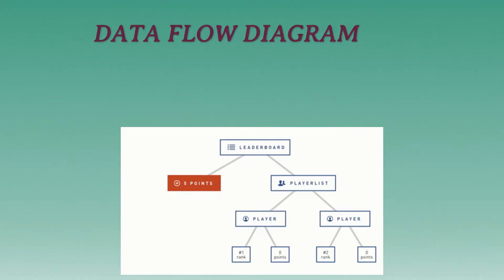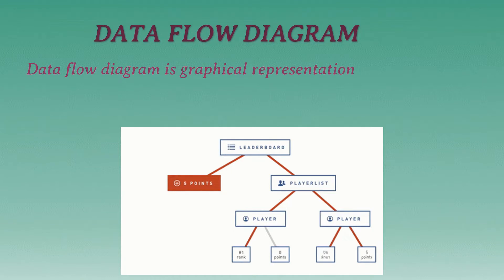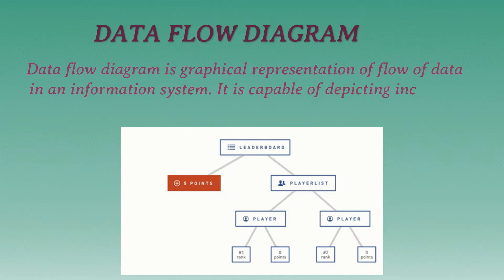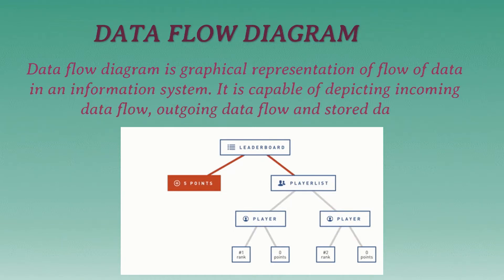A data flow diagram is a graphical representation of the flow of data in an information system. It is capable of depicting incoming data flow, outgoing data flow, and stored data.